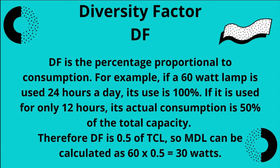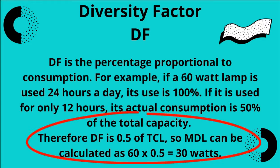For example, if a 60-watt lamp is used 24 hours a day, its use is 100%. If it is used for only 12 hours, its actual consumption is 50% of the total capacity. Therefore DF is 0.5 of TCL, so MDL can be calculated as 60 × 0.5 = 30 watts.